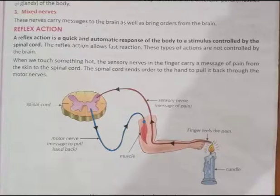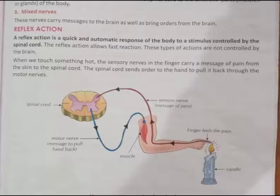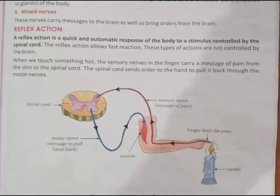When we touch something hot, the sensory nerves in the finger carry a message of pain from the skin to the spinal cord. If we touch a warm thing, the message goes to the spinal cord — it would take time to go to the brain. So the spinal cord sends an order to the hand to pull it back through the motor nerves, sending orders to the muscles to pull the hand back.